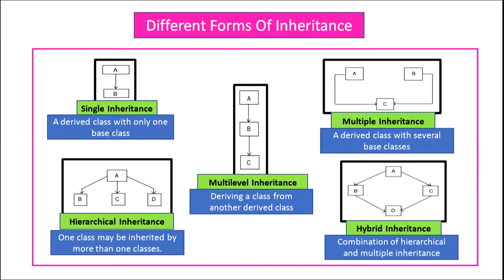There are five different forms of inheritance. The first one is single inheritance. In single inheritance, a derived class is derived from only one base class. You can see in the figure that A is the base class and B is the child class.